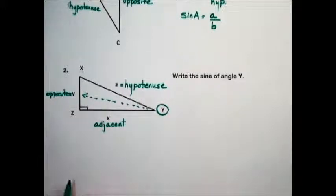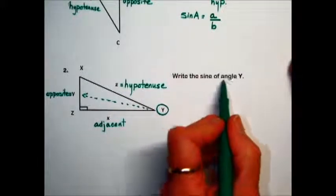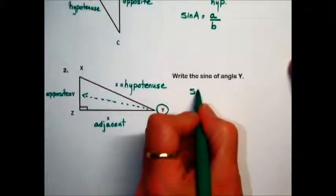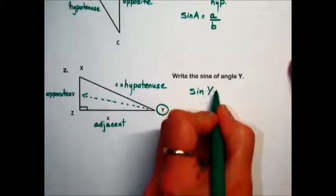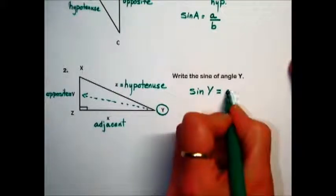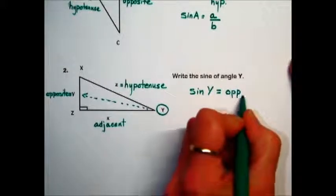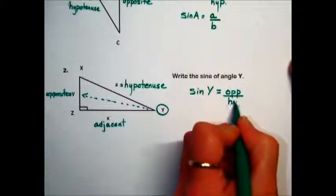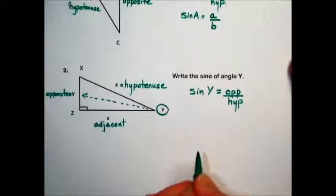For this problem, they want us to write the ratio for the sine of angle Y. So the sine of angle Y, by definition, is the ratio of the opposite side over the hypotenuse side.